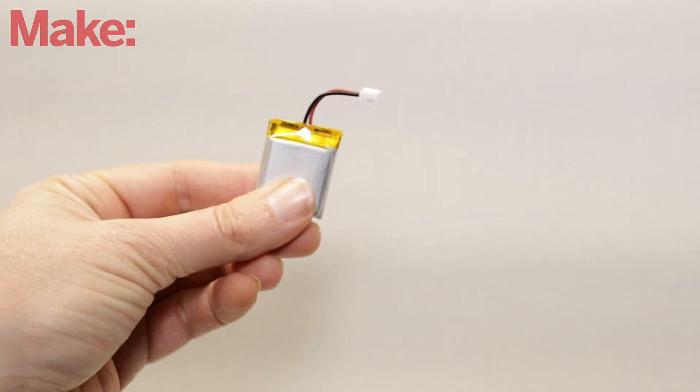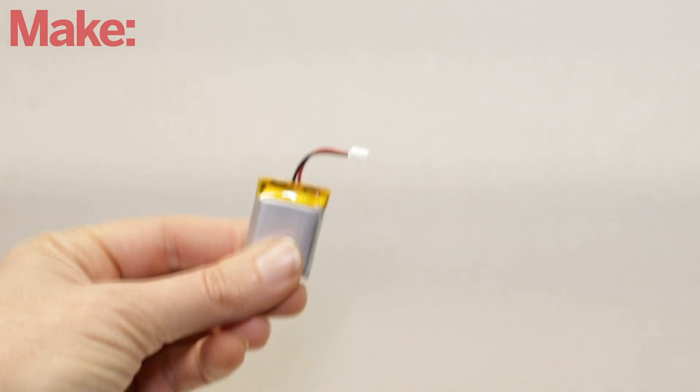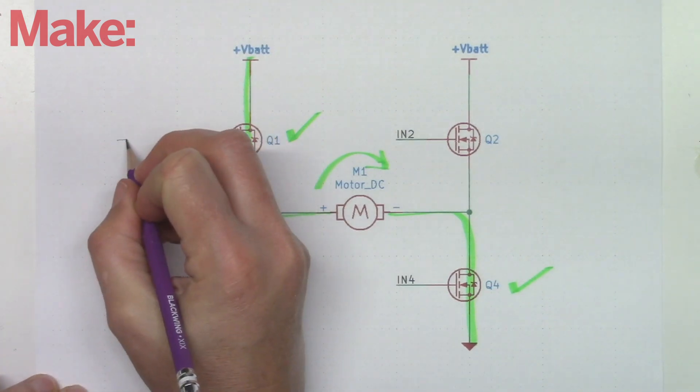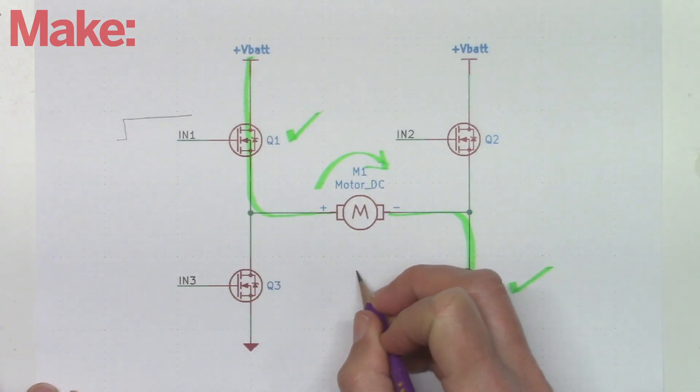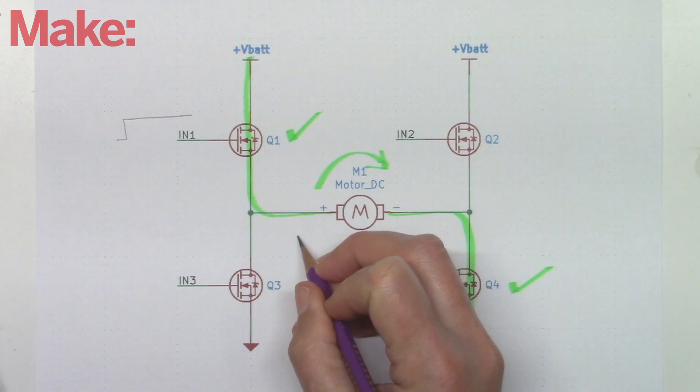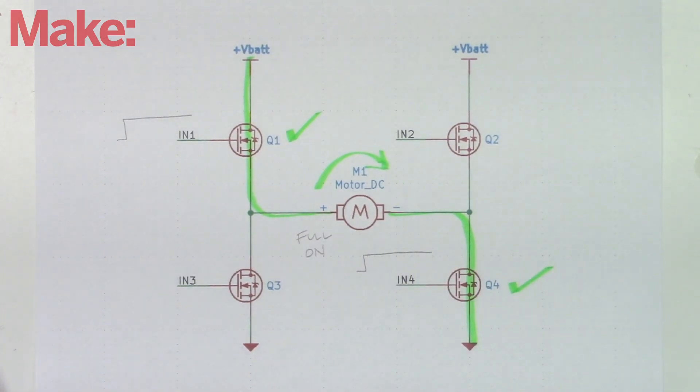But what if we have a fixed power supply whose voltage we can't change, like a battery? An H-bridge allows us to cheat by using a PWM. In our H-bridge, when the top transistor is on and the bottom transistor's gate is held high, full input voltage will be passed through the transistors to the motor and the motor will spin at its rated speed.